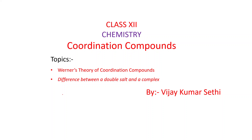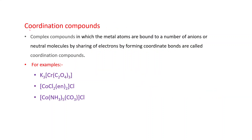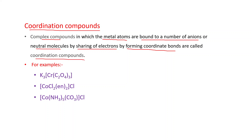First, what are coordination compounds? These are complex compounds in which the metal atoms are bound to a number of anions or neutral molecules by sharing of electrons, forming coordinate bonds. In these compounds, anions or neutral molecules — known as ligands — donate a pair of electrons to the metal atoms to form coordinate bonds.